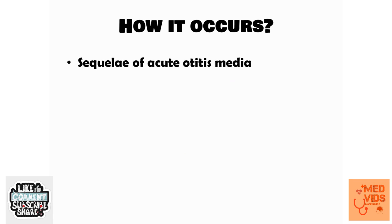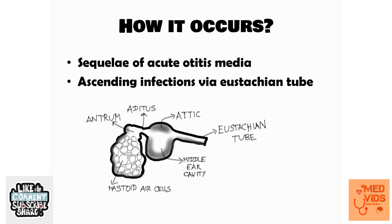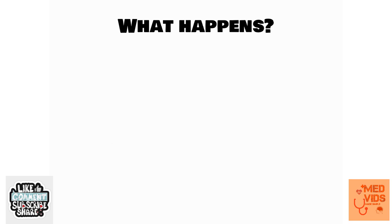CSOM can occur as a sequel of acute otitis media that is not treated properly. It can also result from ascending infections via the Eustachian tube — the tube connecting the pharynx with the middle ear. Recurrent upper respiratory tract infections or pharyngitis can send infected secretions to the middle ear cavity via the Eustachian tube, causing CSOM.